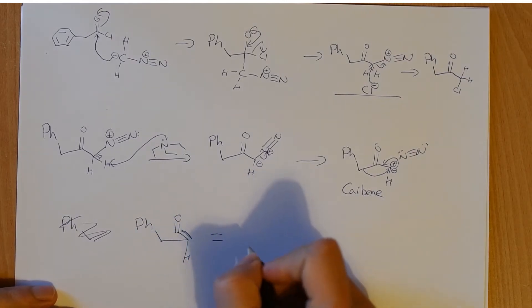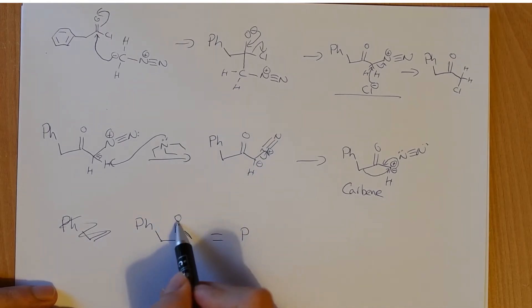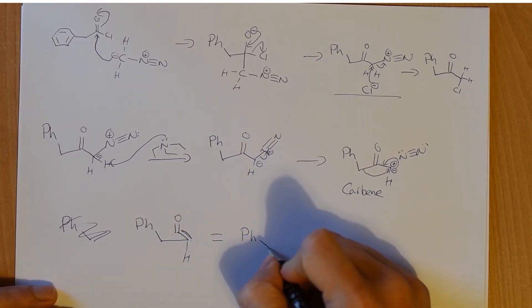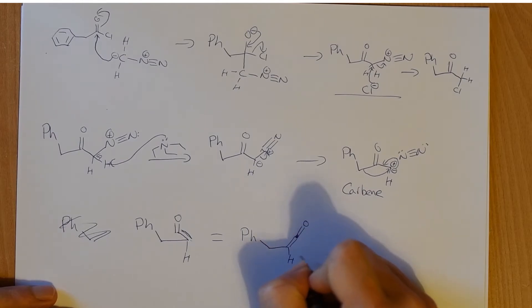Let me draw that out with more sensible bond angles. We know that they are going to have to be in line, they're going to have to be straight or linear, if you think about the orbitals that are overlapping. So there's a carbon in there, and we've made our ketene.